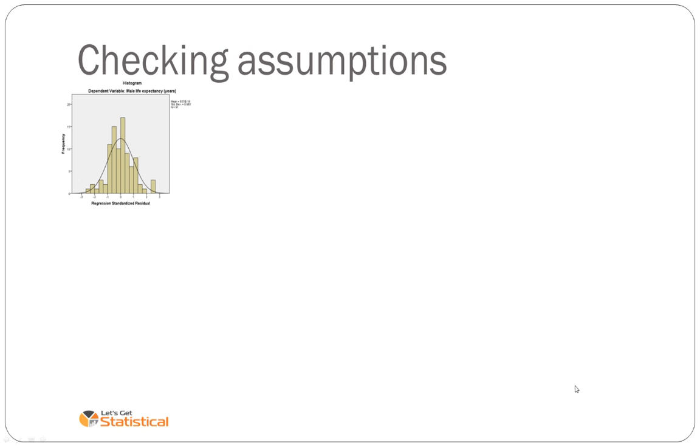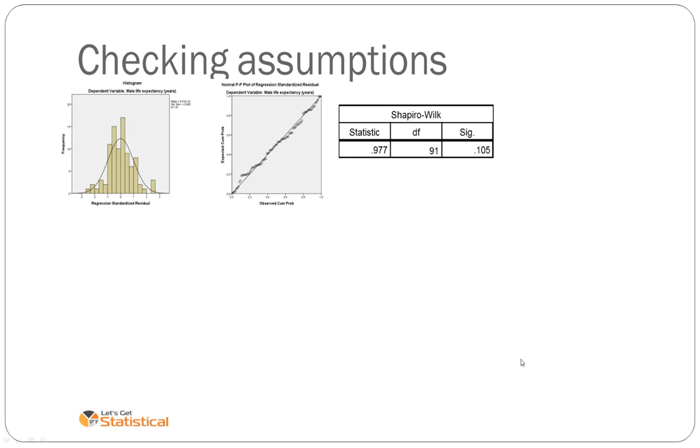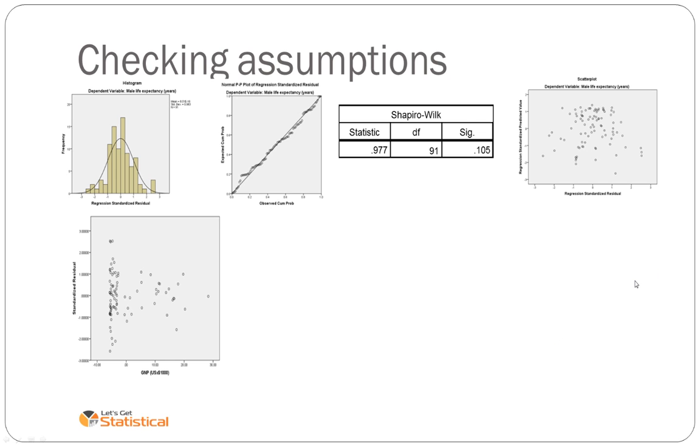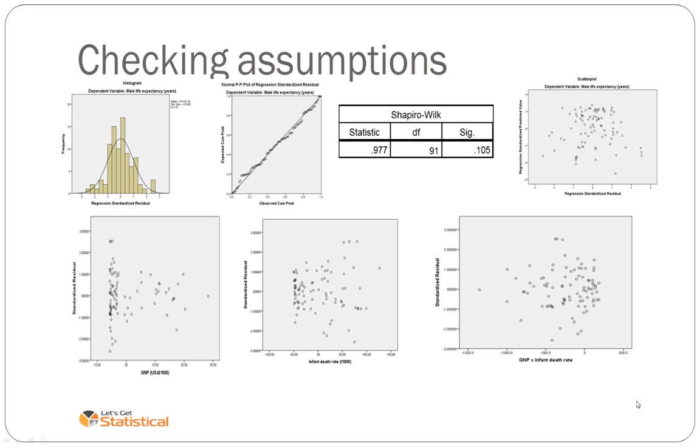But I'm going to go through the assumptions now of the interaction model. We assess the assumption of normality the same way with the normality of the residuals and a Shapiro-Wilk test. We can look at the constant variance and linearity assumption using a scatter plot. We can also plot individual variables against each of the residuals and come up with the following plots.